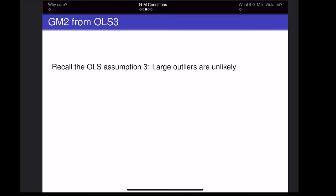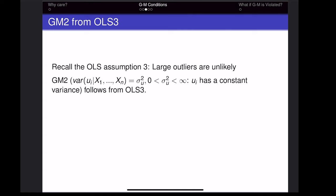The third OLS assumption leads us to the second Gauss-Markov condition. The third OLS assumption is that large outliers are unlikely. The second Gauss-Markov condition states that the variance of the error term equals sigma squared u — a constant variance. This is the idea of homoscedasticity: it doesn't matter what the values of the x variables are, the variance of the error term is the same. If we have heteroscedasticity, this assumption fails.